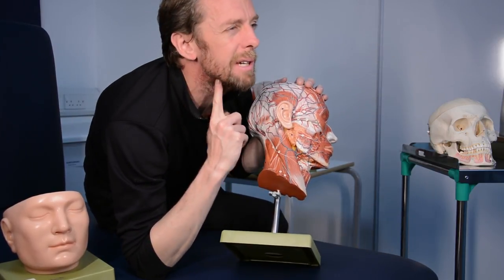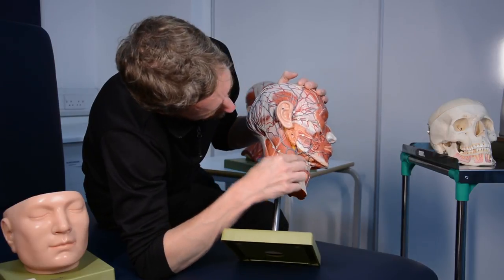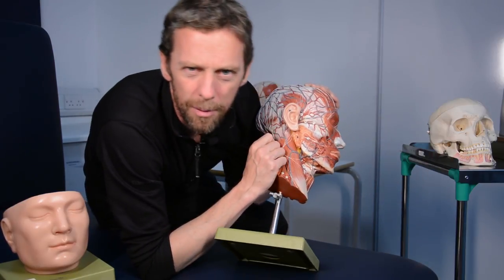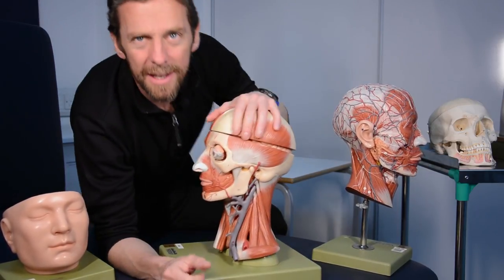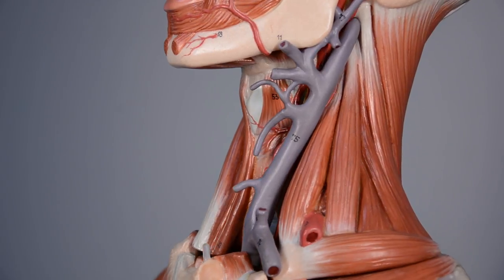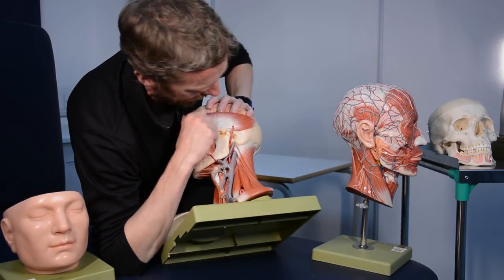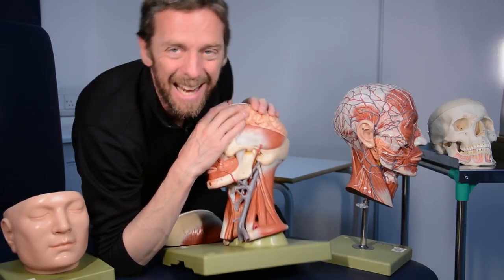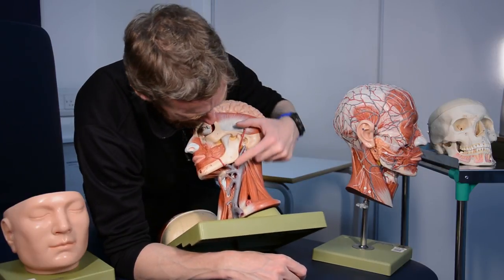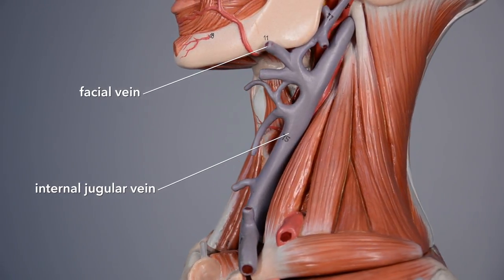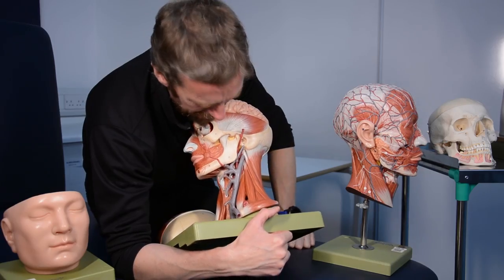The facial vein runs under and around the mandible, running posterior to the artery, and down here it's essentially going to drain into the internal jugular vein — the main vein draining the head and neck. On the other side, this great big vessel is the internal jugular vein. It's such a big vessel because it's also draining all the blood from inside the cranial cavity, dropping out through the skull and running down the neck to get back to the great vessels of the thorax.